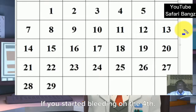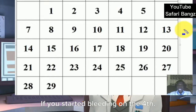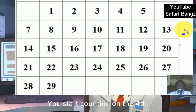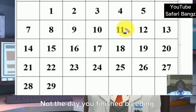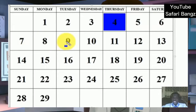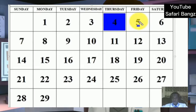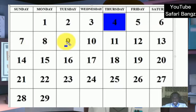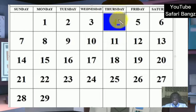So for example, if you started bleeding on the 4th, you start counting on the 4th, not the day you finished bleeding. The first day of bleeding is day 1, the second day is day 2, the third day is day 3, and so on and so forth. So the day you started bleeding is the first day — you start counting from that day.